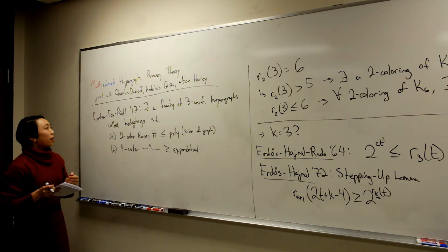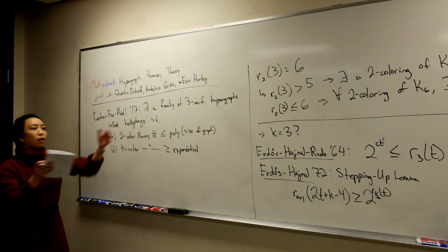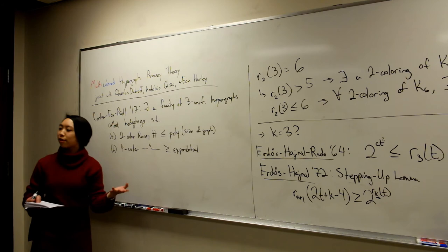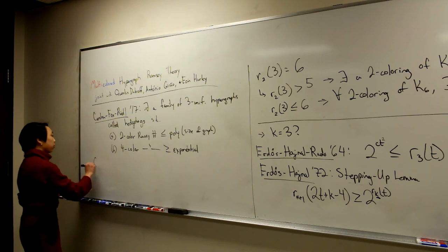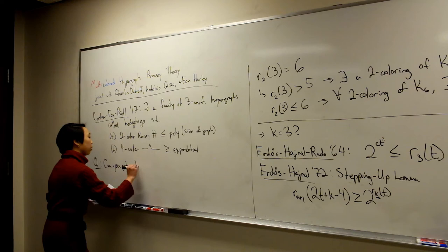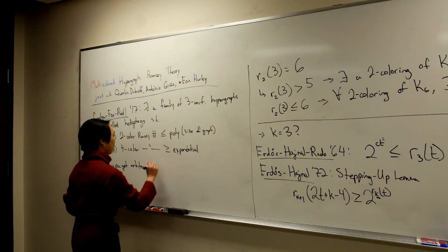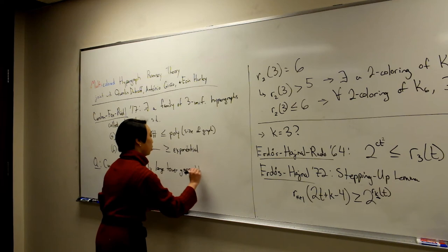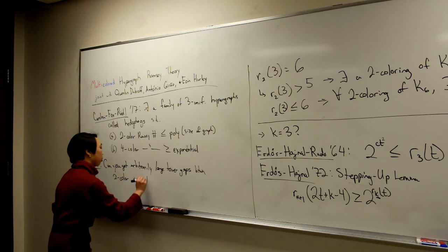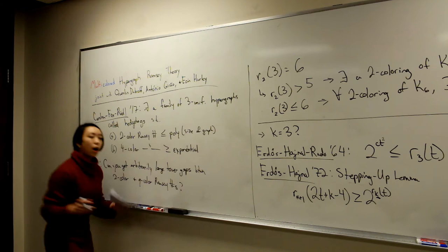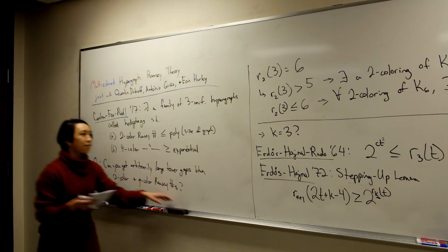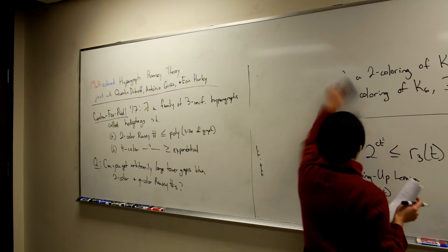This was surprising for people who thought the number of colors doesn't matter. They asked in their paper: can you do even worse? Can you get arbitrarily large tower gaps between the two-color and the Q-color Ramsey number for some Q? Our answer to that was yes — you can make this gap arbitrarily as bad as you want.